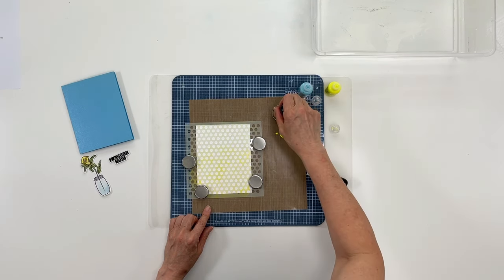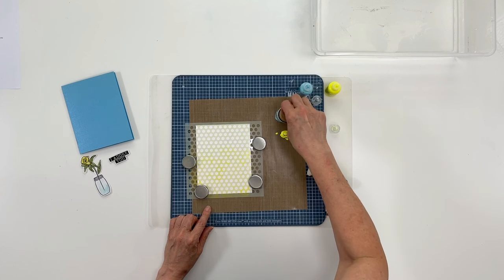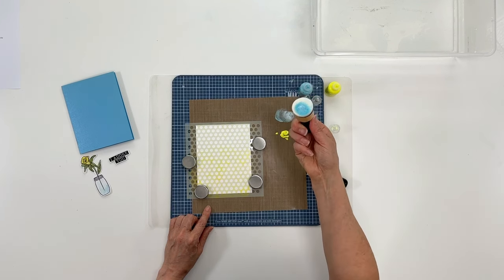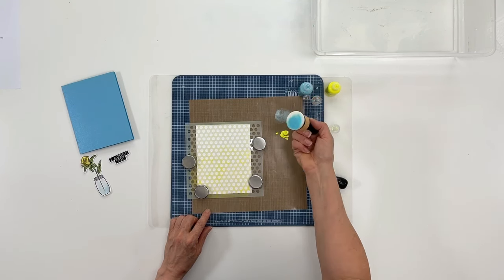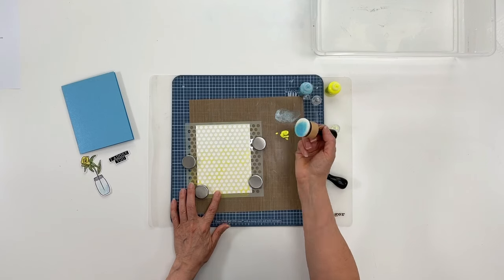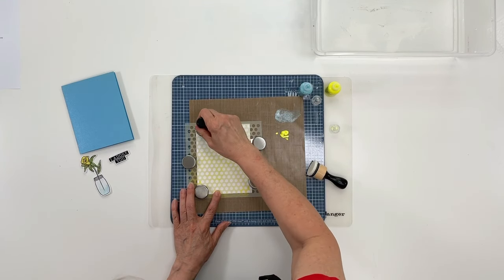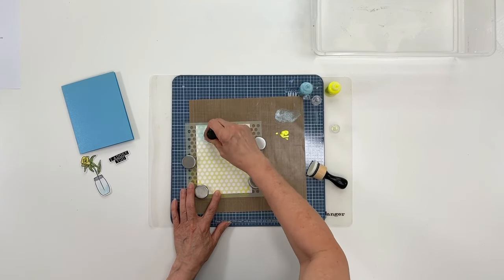What you want to do is just dab your blending tool into the paint, and then once you have a good amount of coverage on there, you just kind of stipple through the stencil, pressing it in.